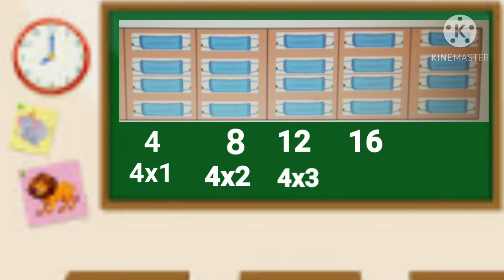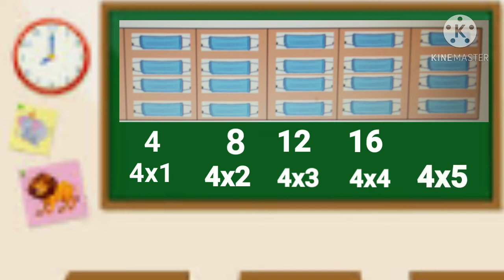Paano naman nakuha ang 16? Mahusay! I-multiply ang bilang ng face mask na 4 sa bilang ng kahon na 4. So 4 times 4, ang sagot ay 16 o labing anim. At para sa panglimang multiple natin, i-multiply ang bilang ng face mask na 4 sa bilang ng kahon na 5. 4 times 5, ang sagot ay dalawampu o 20. Ang gagaling talaga ninyo.